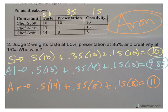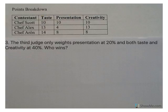Well, Judge 3 is like, you both cray-cray, and we should give presentation 20%, but both taste and creativity should be 40. So according to the third judge...